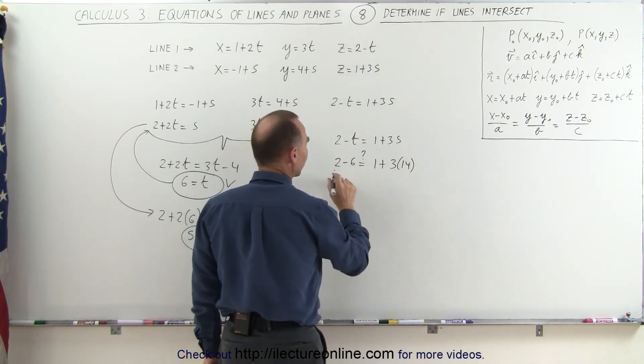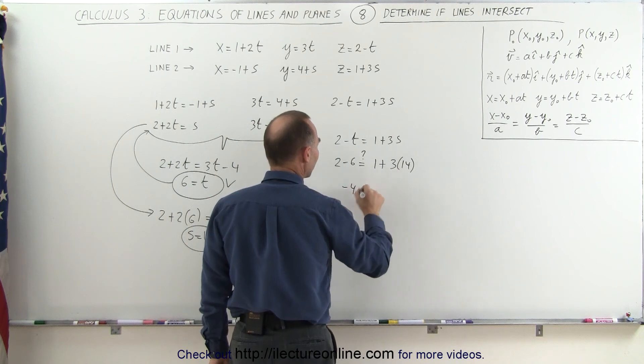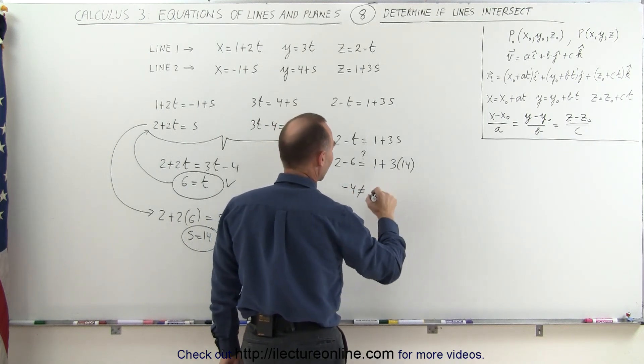And it doesn't look like it does, because 2 minus 6 is minus 4, which is not equal to, that is 42 plus 1, 43.